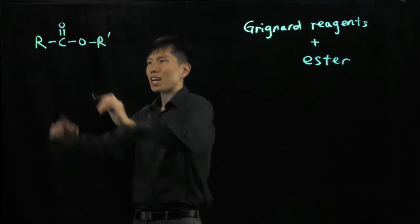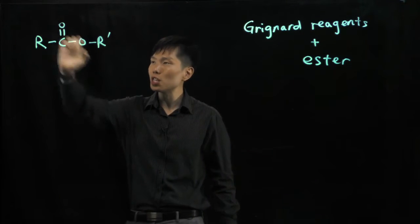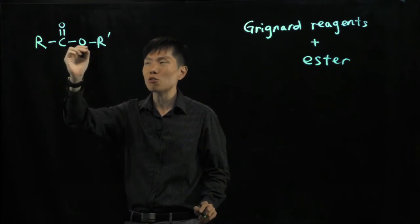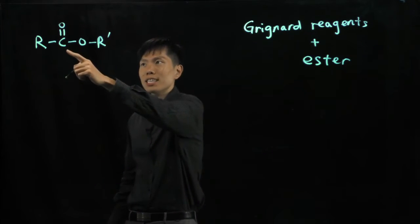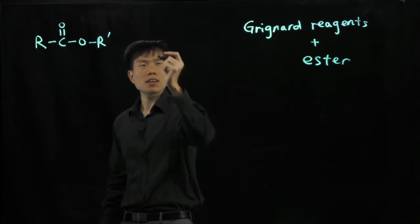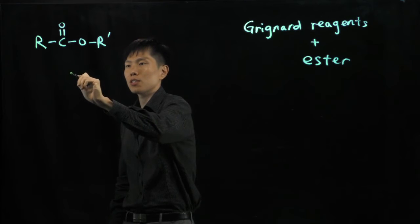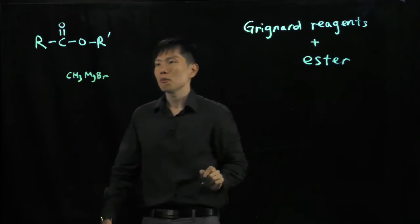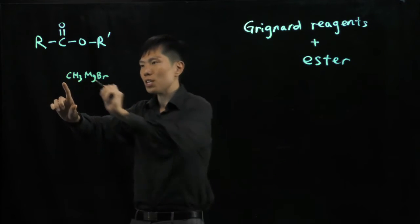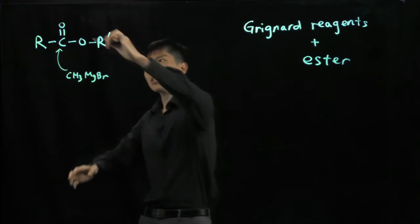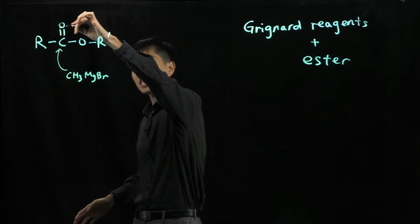This carbon here of the carbonyl group is electron deficient because of the strain of the two oxygen that's next to it, electronegative, that pull electron cloud density away from this carbon. So if I'm going to throw in a Grignard reagent, let's say CH3MgBr. What happens is this CH3 will attack this carbon, break the pi bond, which is the weakest bond here.